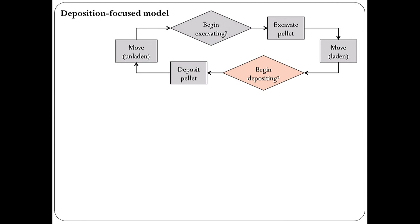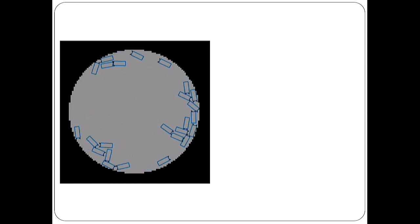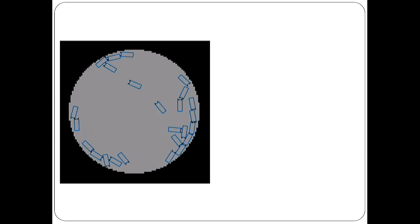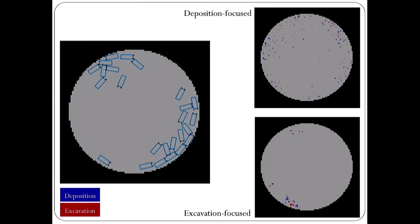So we've got an alternative to the traditional deposition-focused flowchart — another cartoony flowchart, but now focused on excavations. This goes back and forth between wandering through the arena and being in excavating mode, where the interesting thing is how they decide whether to join a site where others are digging, and the important factor is how many are currently digging at that time. We coded these up in simulation as a sanity check — letting simulated termites dig according to either the deposition-focused or excavation-focused flowchart.